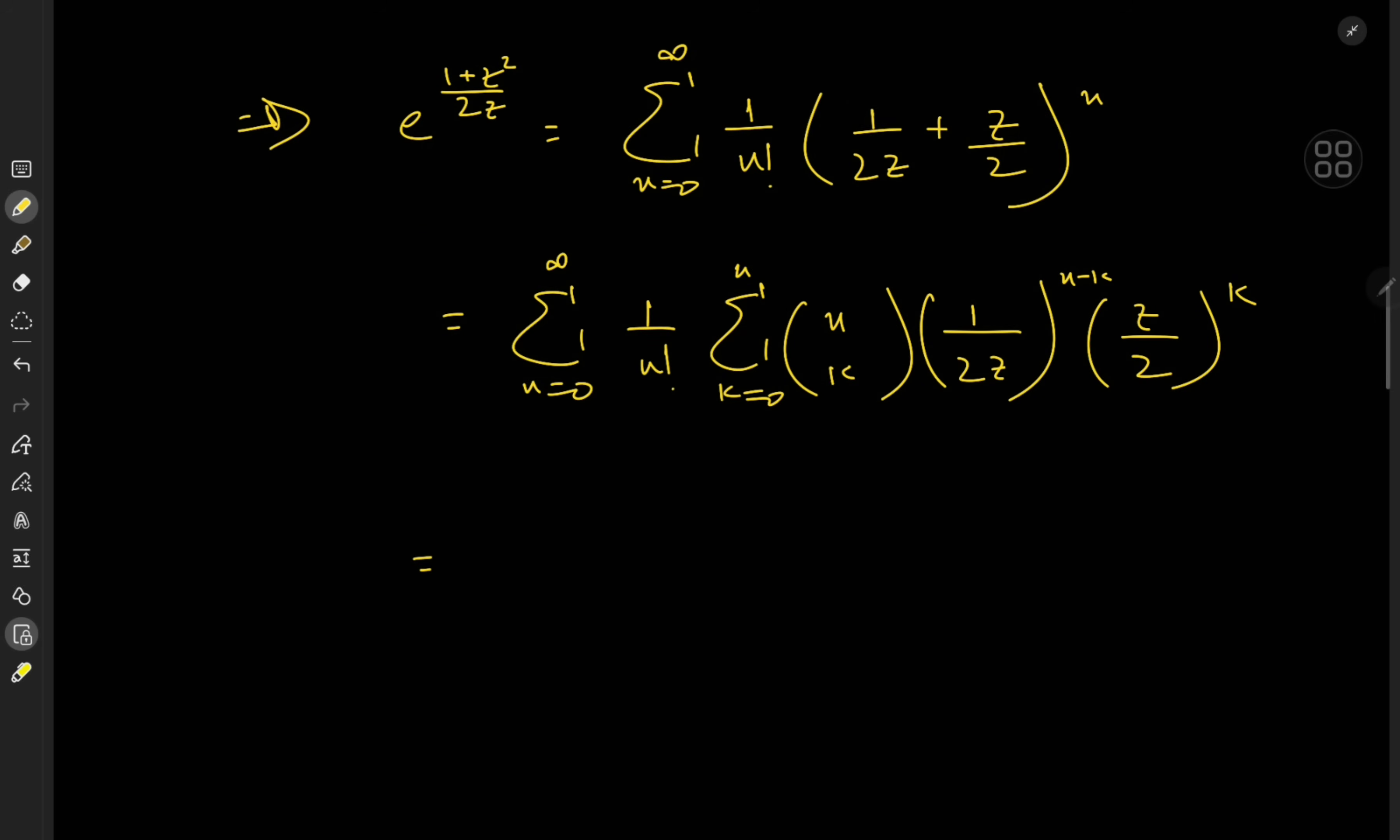And now I need some simplification. So we have the sum over n from 0 to infinity, 1/n!, sum over k from 0 to n, n choose k. 1 to something is just 1. Then we have 1/2^(n-k) times 1/z^(n-k), z^k over 2^k. Of course, I could write this as 2^(k-n), and I could write this as z^(k-n).